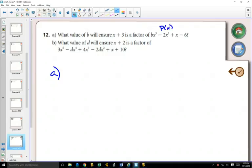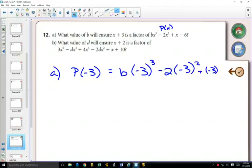If I call this P(x), then when I plug in P(-3), which would be b(-3)³ - 2(-3)² + (-3) - 6, that should equal 0.